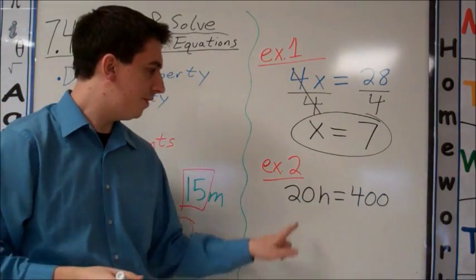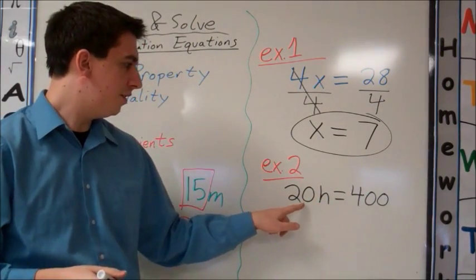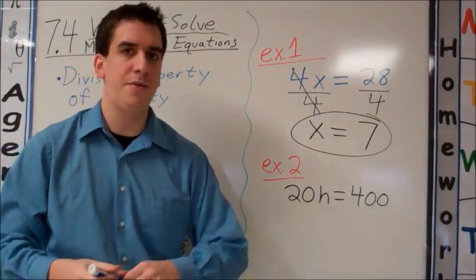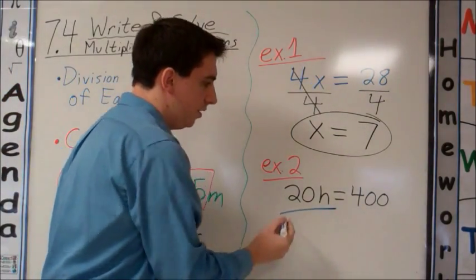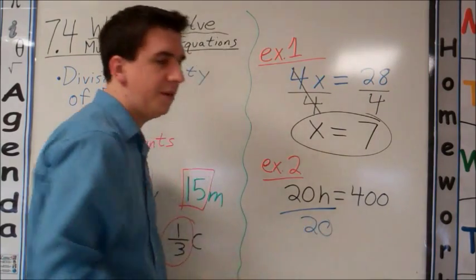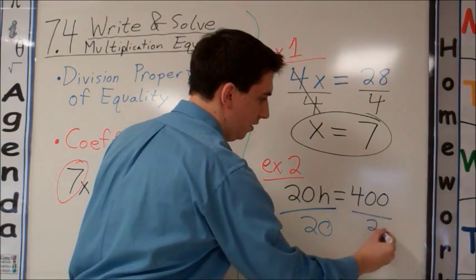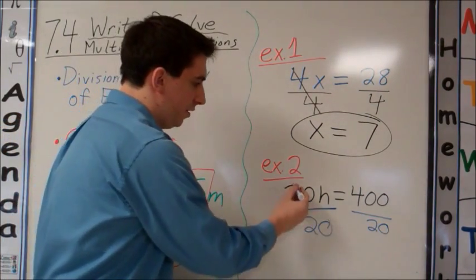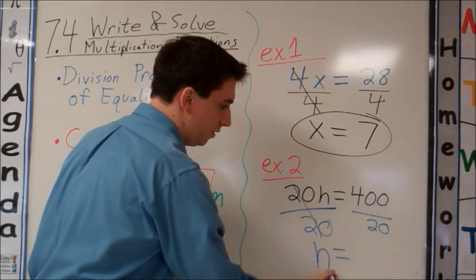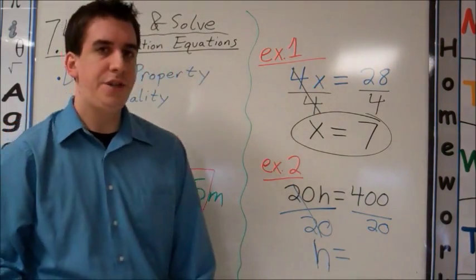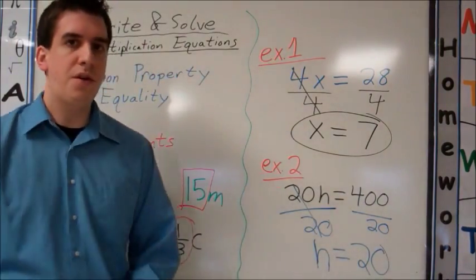Let's look at example 2. We have 20h equals 400. Remember when the number is directly next to the variable, that means you're multiplying. What's the opposite? Division. Divide by 20. If I do it to the left side, I have to do it to the right side of the equation. And remember, these will divide out. You're only left with h. h equals 400 divided by 20 is 20.